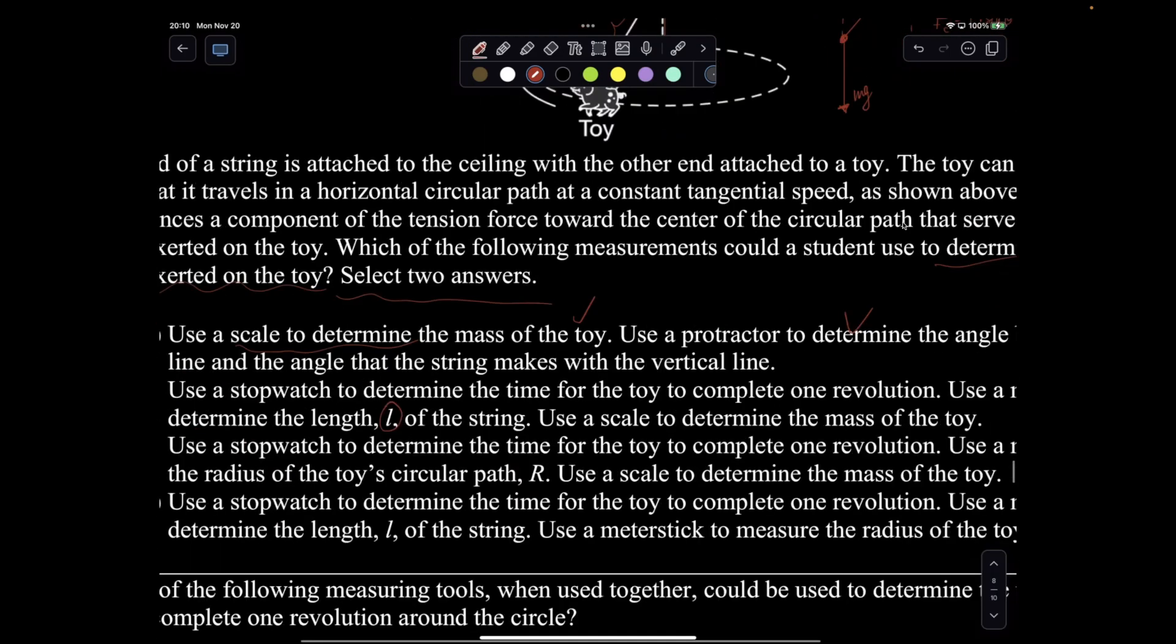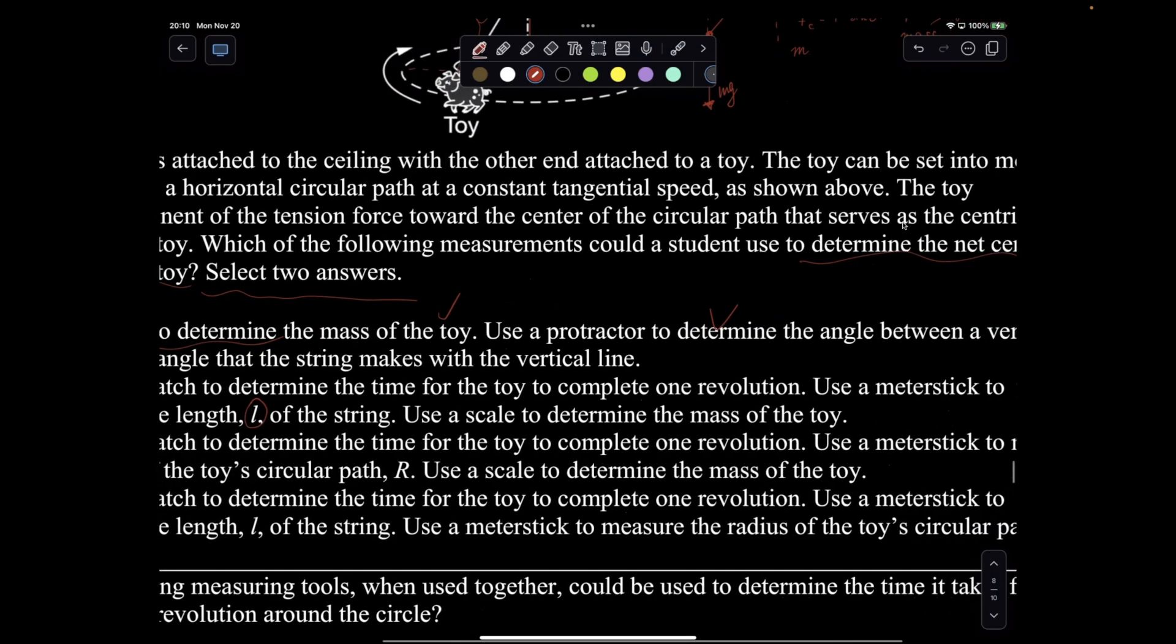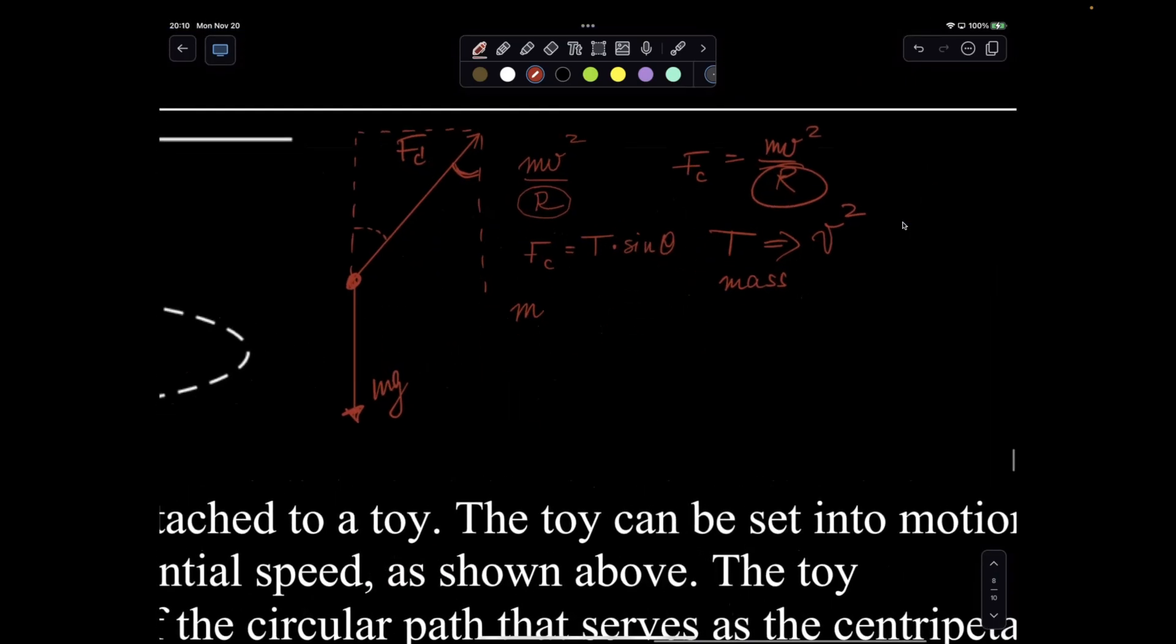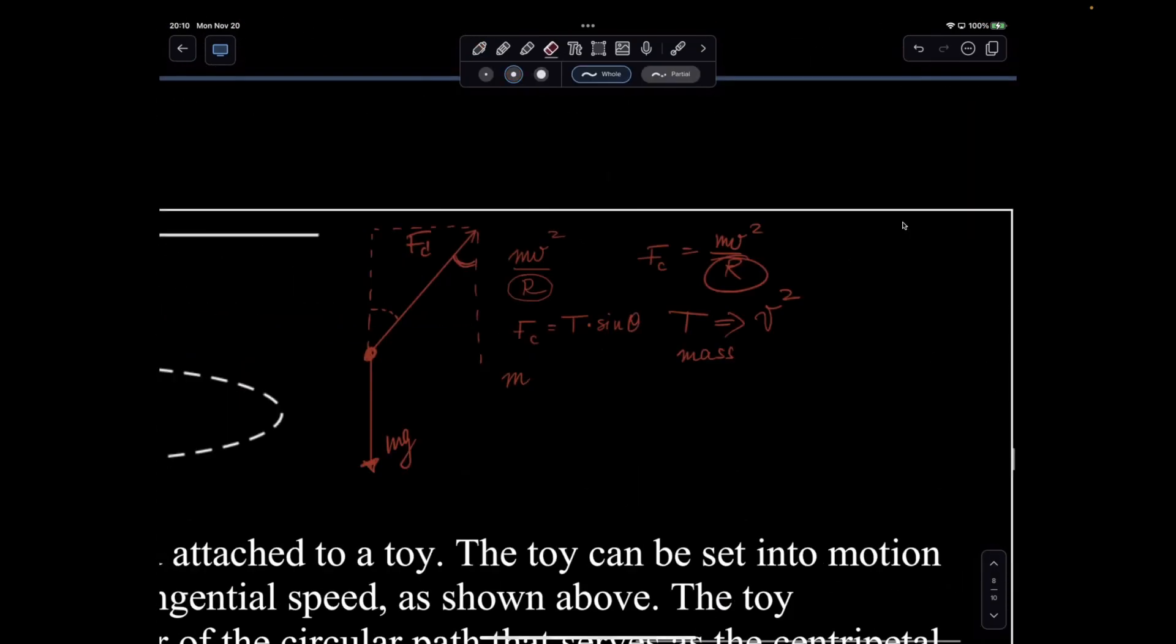Protractor to determine the angle and then the string makes with the vertical line. That's it. Is that an option? If I do that, let's see. So do I have an option like that? So I need the period, and I need mass and radius.